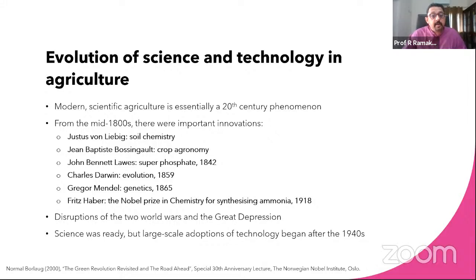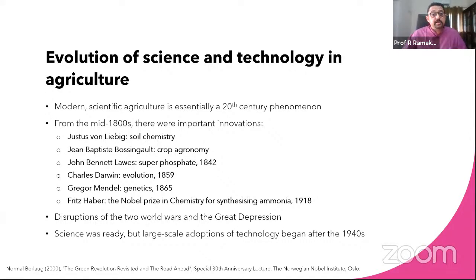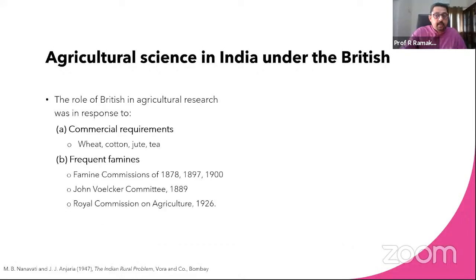These scientific endeavors were disrupted by the two world wars and the Great Depression. From the 1930s onwards there was increased adoption of improved seed varieties in the United States and Europe. Though science was ready, large-scale adoption of technology began only after World War II — a global phenomenon also true for India — when crop yields began to rise at a very rapid rate.